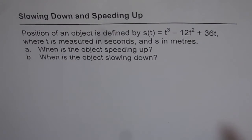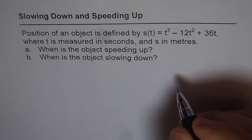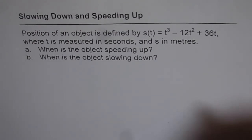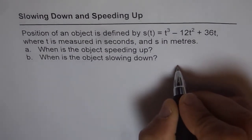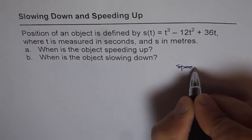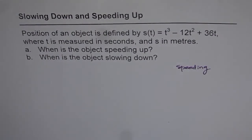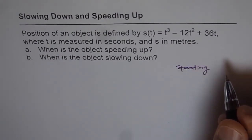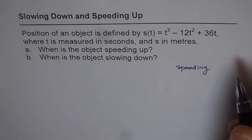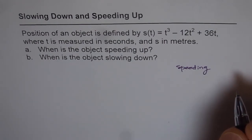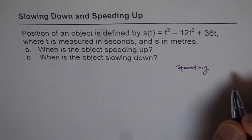The object actually speeds up if both velocity and acceleration are positive, or both of them are negative. Displacement, velocity, and acceleration are all vectors, so negative and positive signs make a huge difference. If both are negative or both are positive, then in net we get a speeding up result.